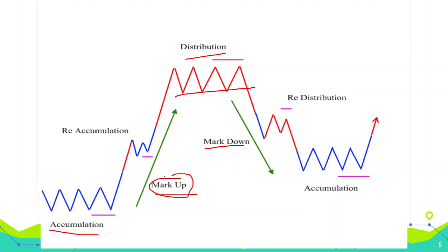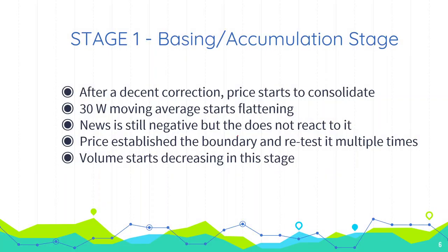The markup stage is the best stage for traders or investors to make profit. Then we have the markdown stage, which is typically a bear market where every stock is falling — no matter how the news is, no matter how the fundamentals are, the stock will just keep falling.